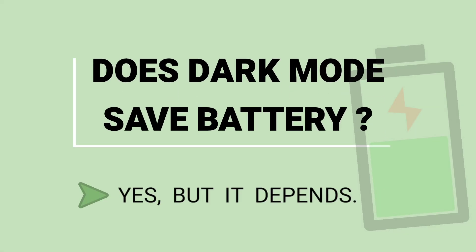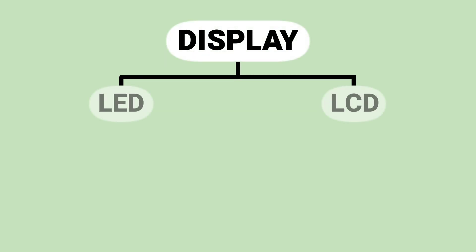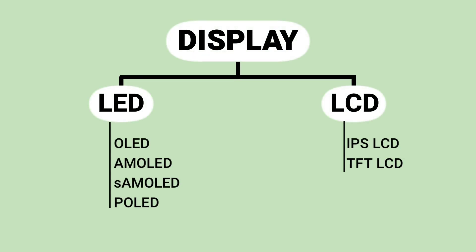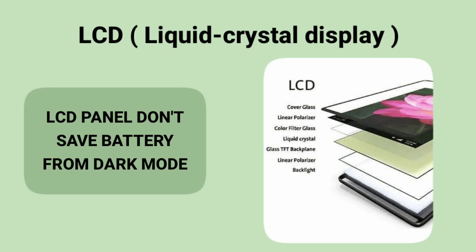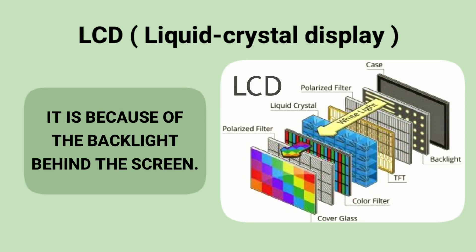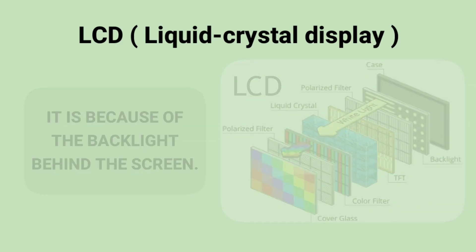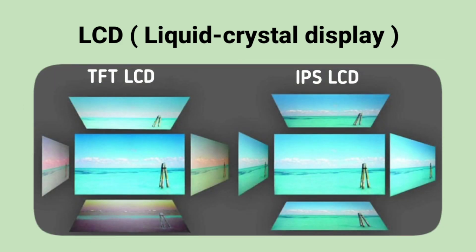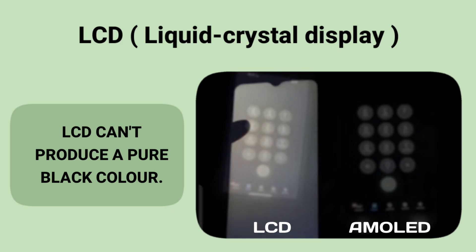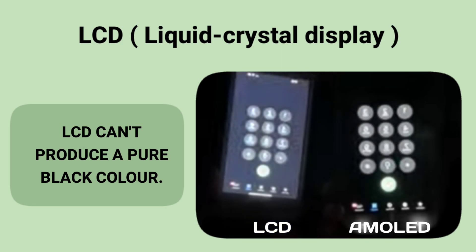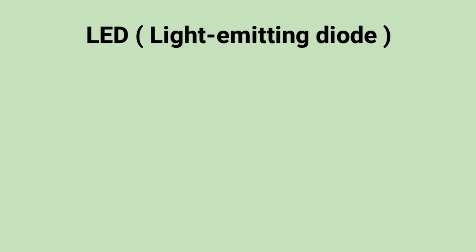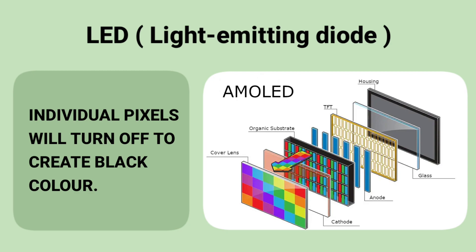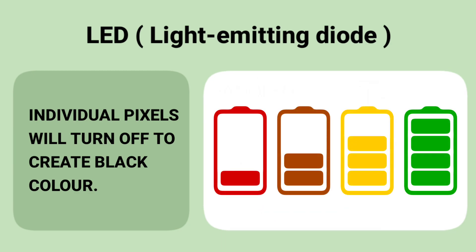It depends on the display type. There are mainly two types of displays: LED and LCD. LCD panels don't save battery from dark mode at all, because of the backlight behind the screen. The backlight continues to produce light even when the pixels are black, so it can't produce a pure black color. But in OLED displays, dark mode can extend your battery life by up to 30%, because when the display is black, the respective pixels are turned off to create the black color, which saves battery.